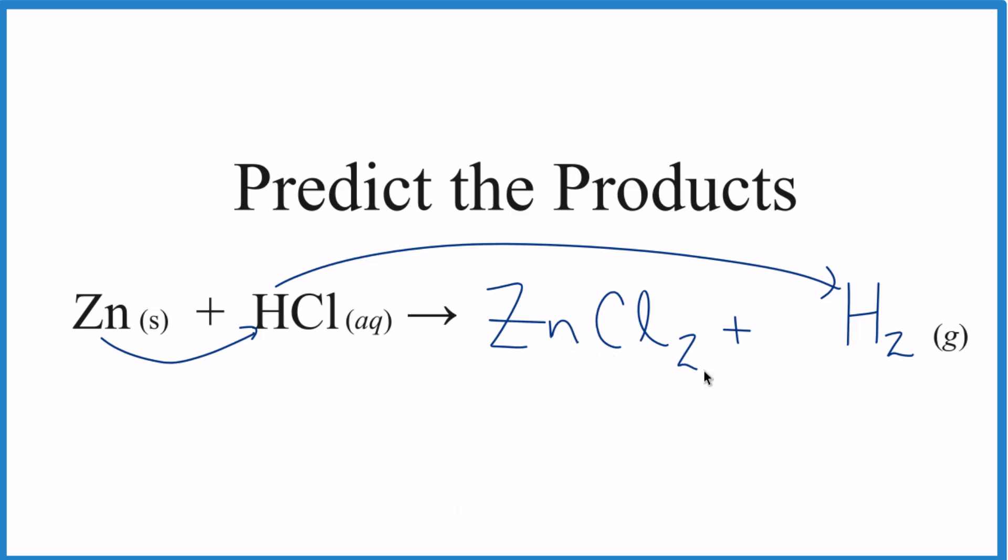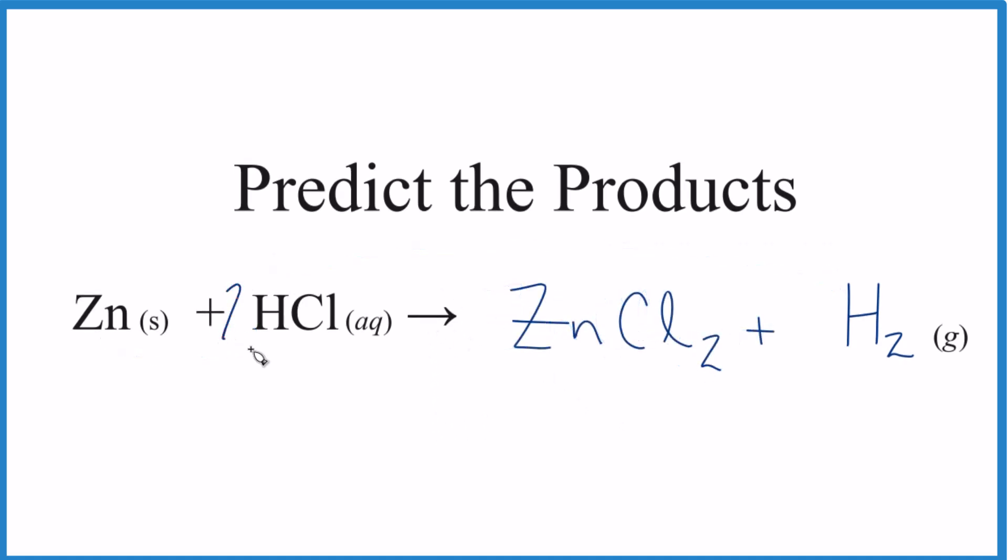If you need help finding the charges on ions, there's a link at the end of this video. This equation isn't balanced. Since we have two chlorines here, we could put a 2 here. That would give us two chlorines, and that would give us two hydrogens. That equation would be balanced.